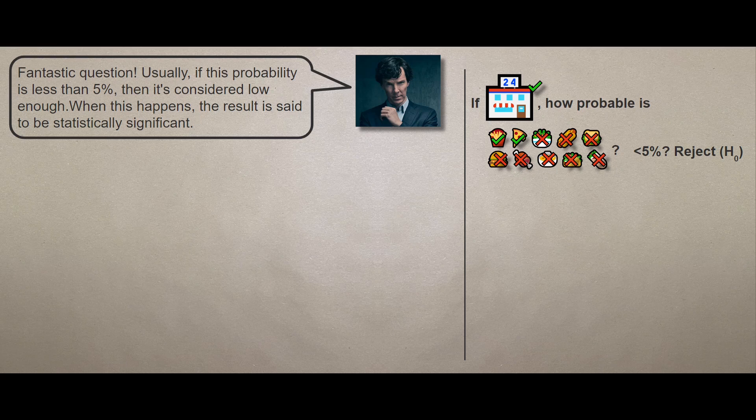Just to elaborate here, it's essential to clarify that the choice of the significance level, the 5%, is arbitrary and can vary depending on the context and field of study. Lower thresholds, like 1%, may be used for more strict criteria. The researchers should justify their chosen significance level based on the specific circumstances.